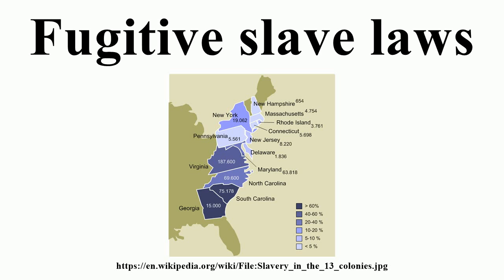King's phrasing from the 1785 attempt was incorporated in the Northwest Ordinance of 1787 when it was enacted on 13 July 1787. Article 6 has the provision for runaway slaves: Art. 6. There shall be neither slavery nor involuntary servitude in the said territory, otherwise than in the punishment of crimes whereof the party shall have been duly convicted, provided always, that any person escaping into the same, from whom labor or service is lawfully claimed in any one of the original states, such fugitive may be lawfully reclaimed and conveyed to the person claiming his or her labor or service as aforesaid.